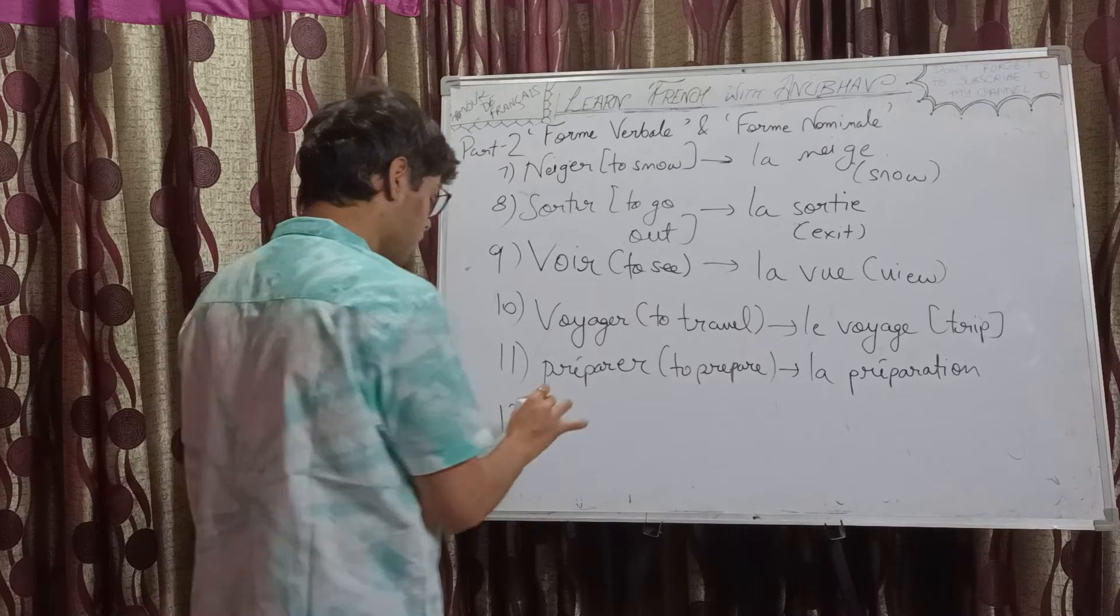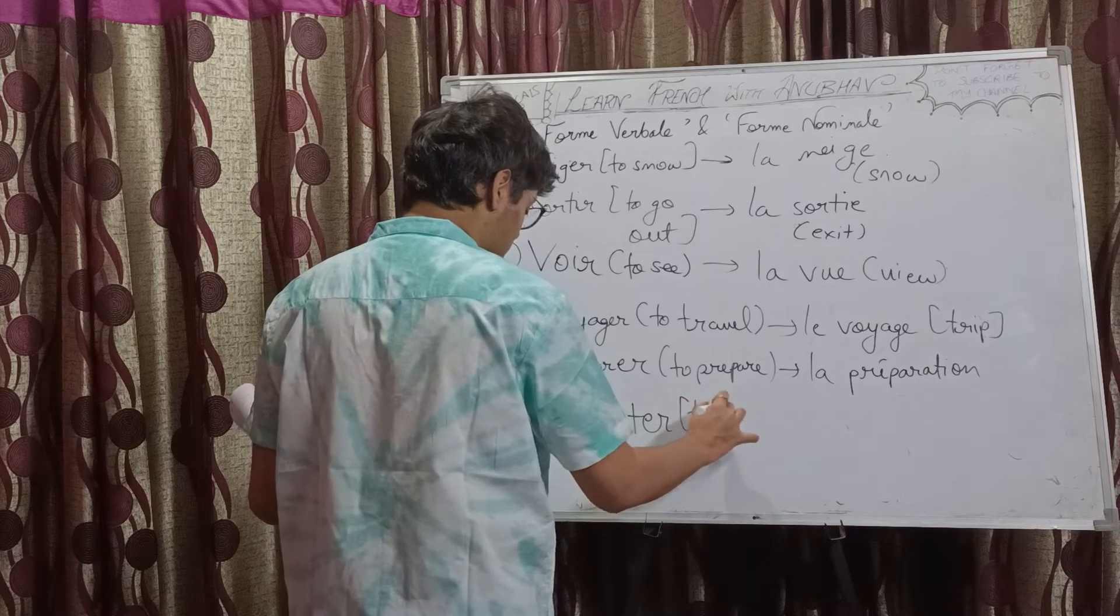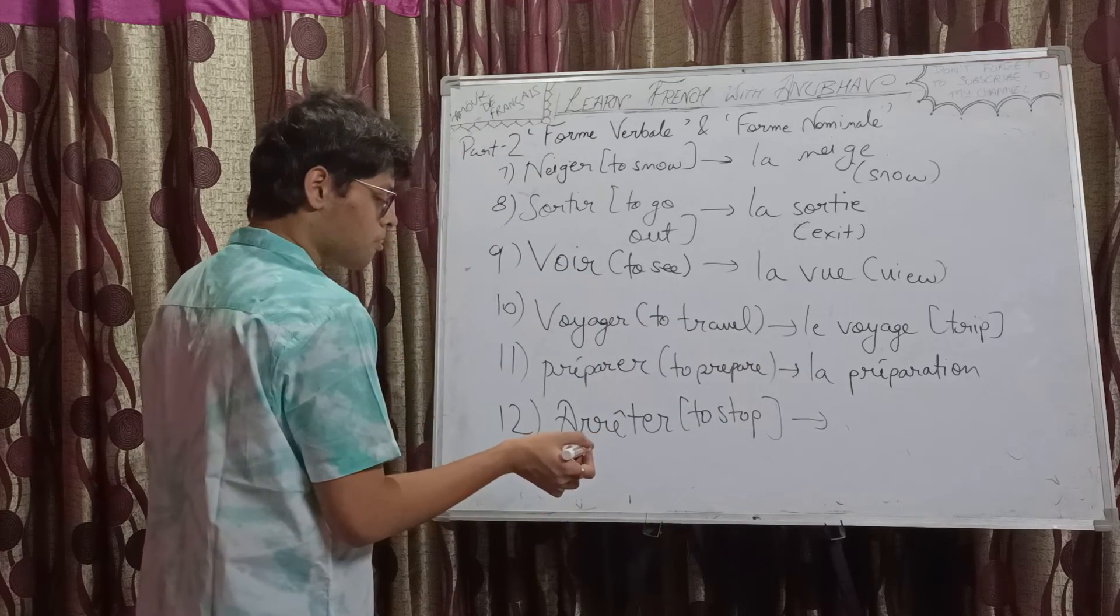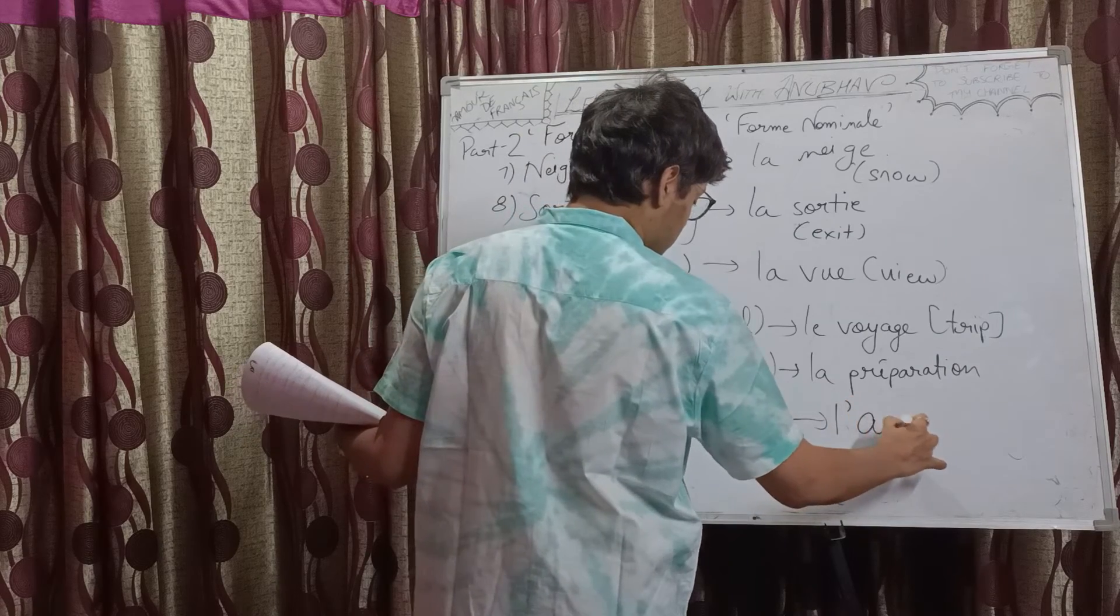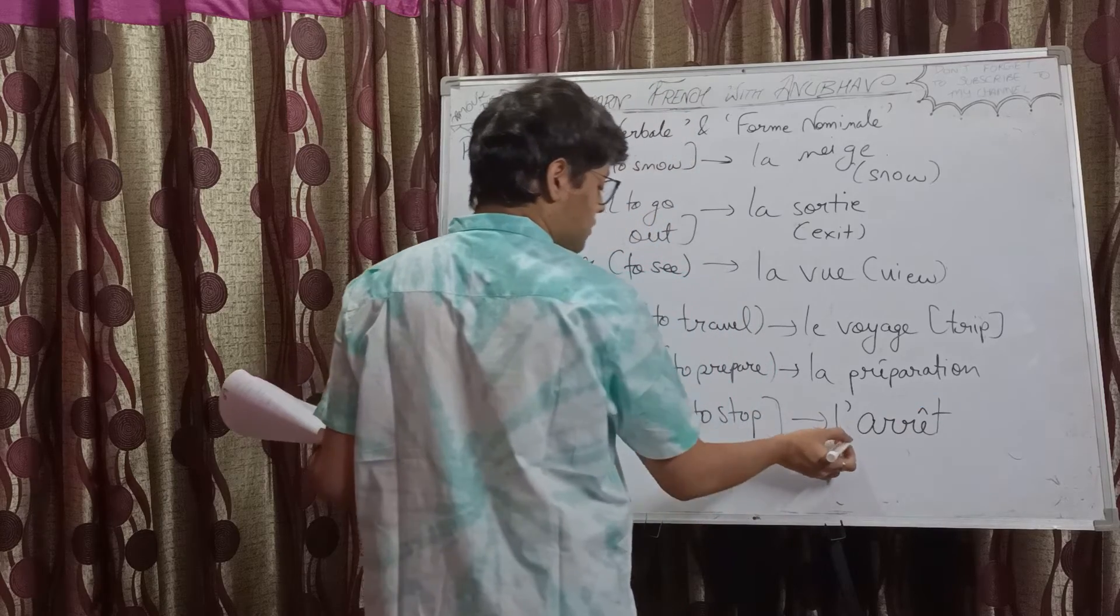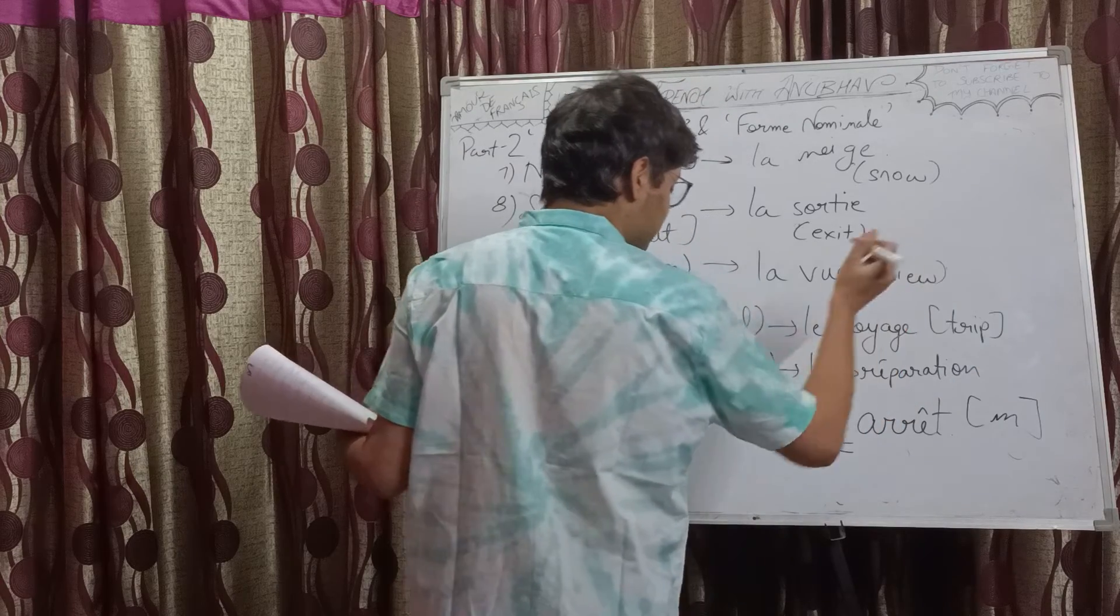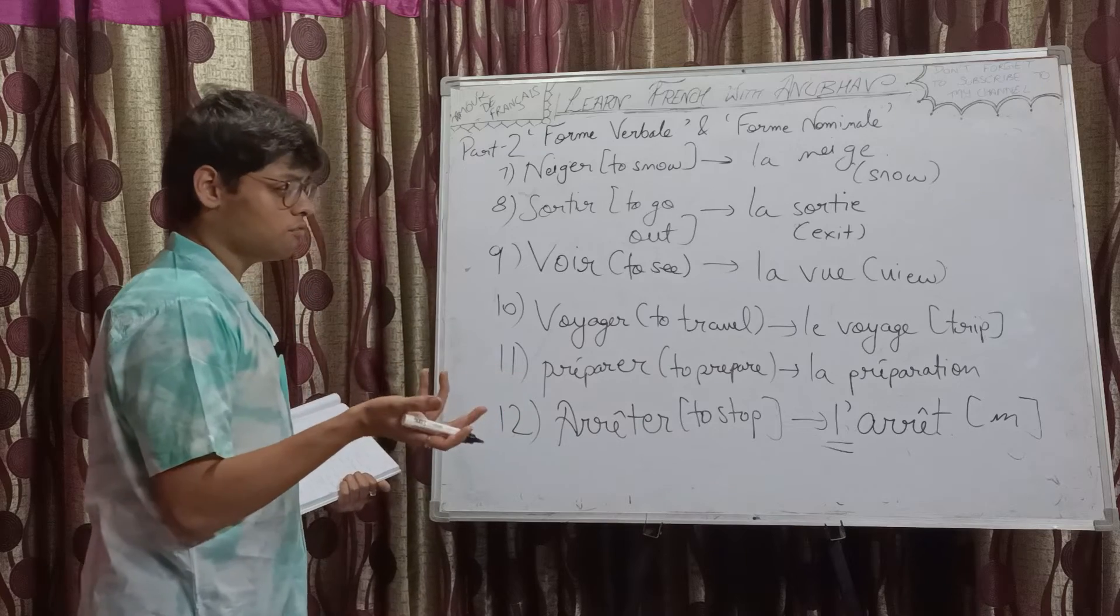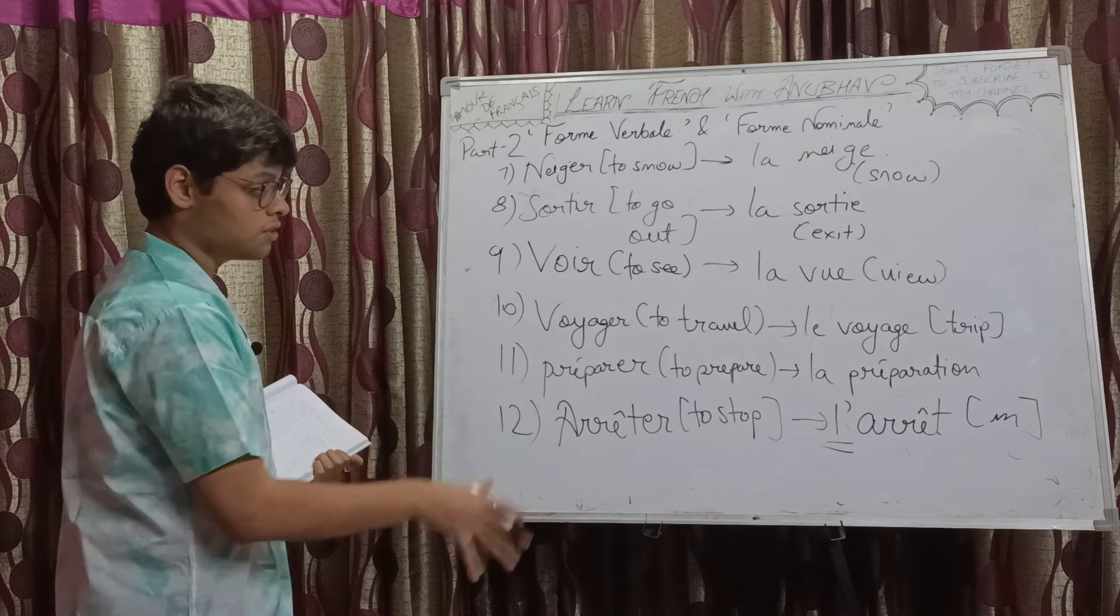And lastly, number 12, the last one for today's video: arrêter. Its noun form is simply l'arrêt. It begins with a vowel, hence l'apostrophe, and it is masculine singular. For example, if you want to say bus stop, we say arrêt du bus.